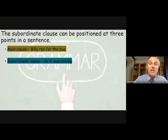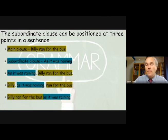And it can go in three places: at the start, at the middle, or at the end. Now at the start, the subordinate clause must be followed by a comma. As it was raining, comma, Billy ran for the bus. If you want to embed it and put it in the middle, somewhere in the main clause, it's got to be surrounded by commas. So Billy, as it was raining, ran for the bus. And if it's at the end, it does not need to have a comma. Billy ran for the bus as it was raining.